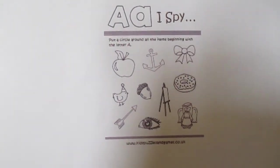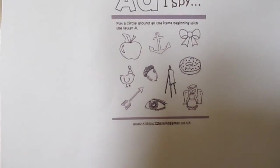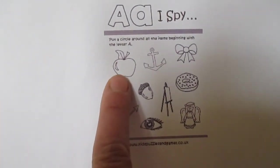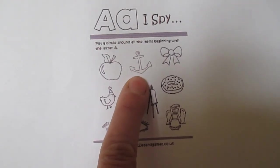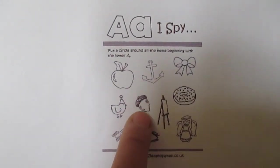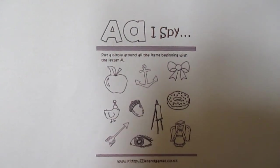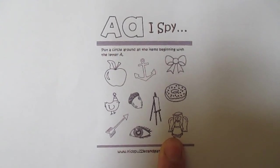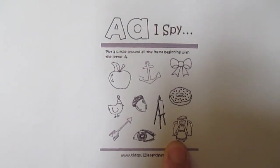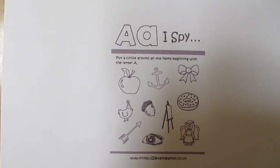Let's check if you've got them right. So all of the things that begin with the A sound. We have apple, anchor, acorn, arrow, and angel. How did you get on? Well done. We'll see you next time.